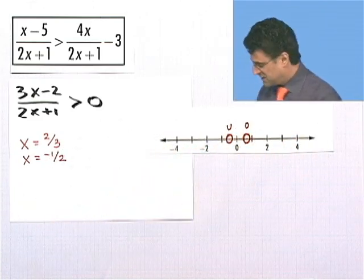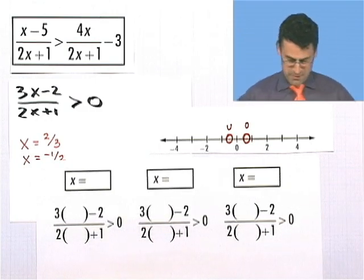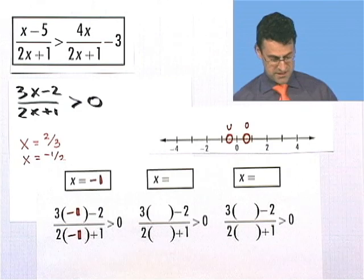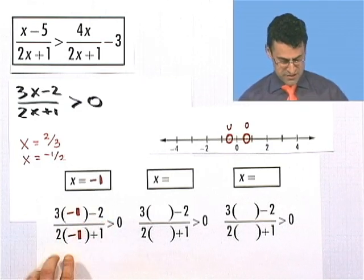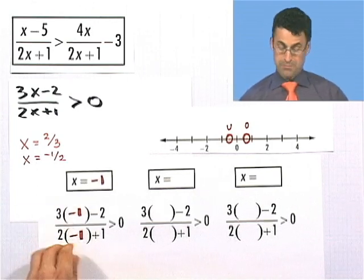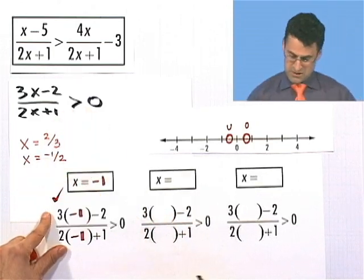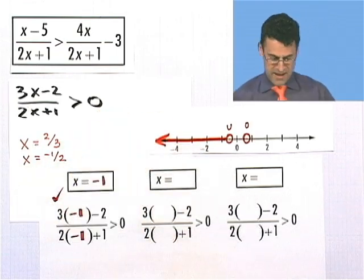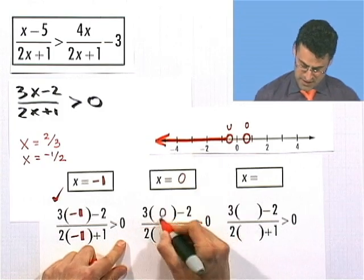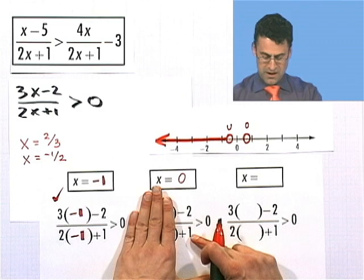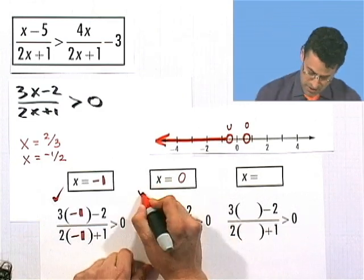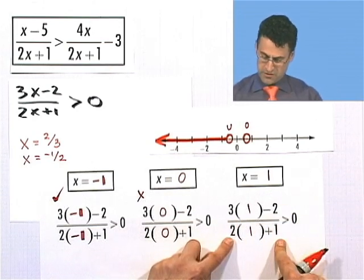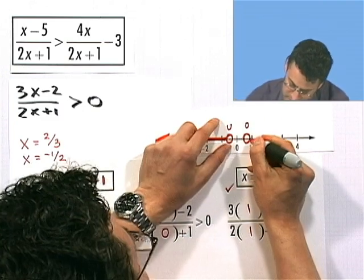I have three regions to consider. For the leftmost region, pick negative 1: 3 times negative 1 minus 2 is negative, and 2 times negative 1 plus 1 is negative, so negative over negative is positive — that's bigger than 0, so this region is good. Between negative 1 half and 2 thirds, pick 0: that gives negative 2 over 1, which is negative — not greater than 0, so this region is no good. For the rightmost region, pick 1: 3 minus 2 is positive, 2 plus 1 is positive, positive over positive is positive — so include that region too.